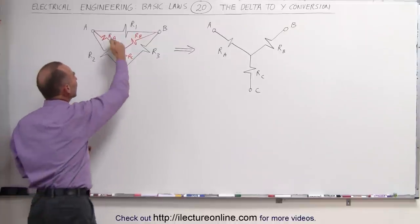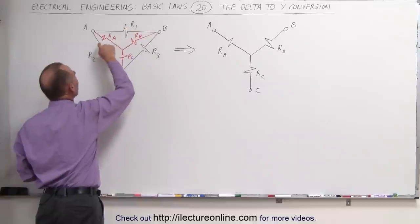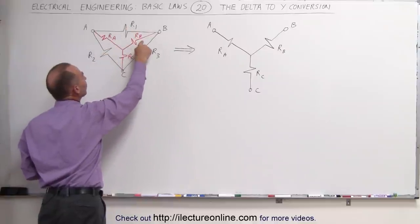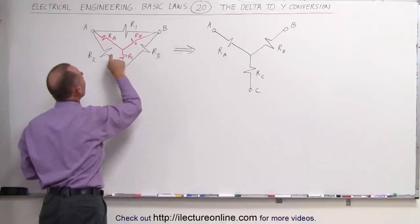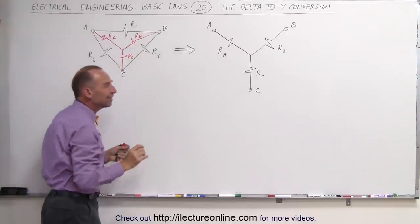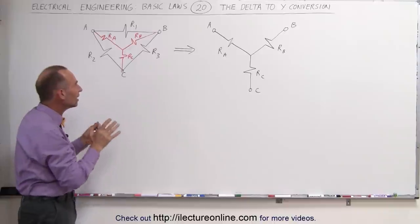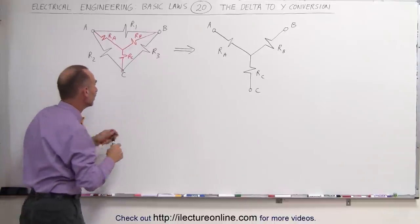Notice that RA is situated between R1 and R2, RB is situated between R1 and R3, and RC is situated between R2 and R3. It is key to see that. Once you see that, then it's easy to understand how the equations are done.